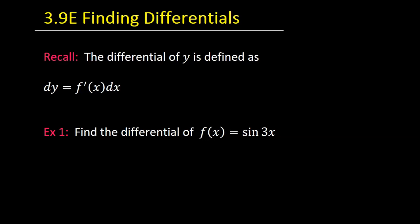So if I want to find the differential of this function, I'm going to just say dy is equal to the derivative of this. So I will have to use the chain rule because I've got the outer function of sine x and then the inner function of 3x. So the derivative of sine is cosine. So I start off by writing cosine 3x, but then I need to multiply by the derivative of the inner function, and that's 3.